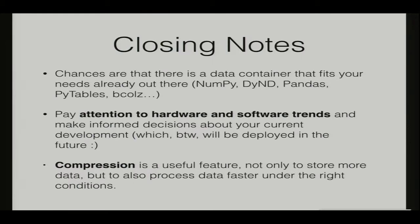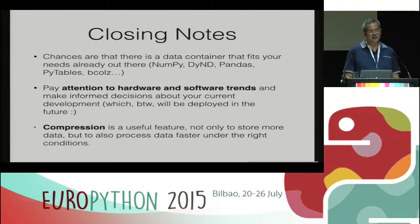To close the talk: just decide which data container fits your needs, and these containers should already be out there. My advice is always to check the existing libraries and choose the one that fits your needs. Sometimes you can be surprised — depending on the data structure you are using, you can get much more performance, not because of the algorithm, but because of the data structure or data container. You should pay attention to hardware and software trends and make informed decisions about your current development, which will be deployed in the future. It's important that you are conscious about new computer architectures, because you and your application are going to use them.